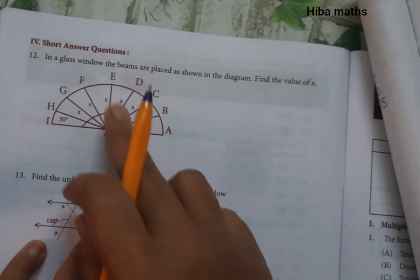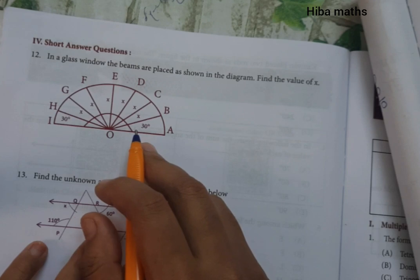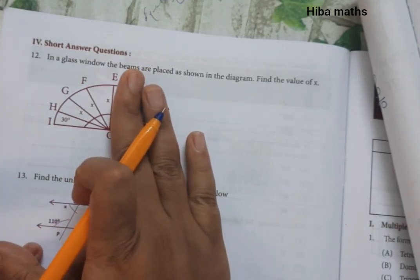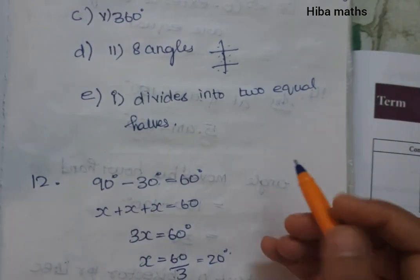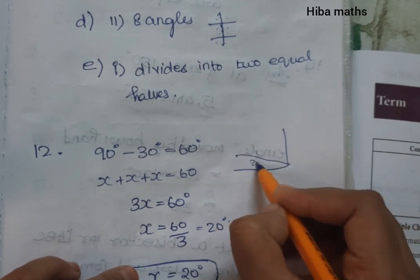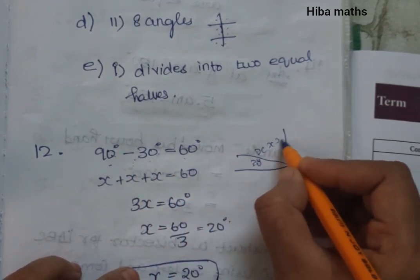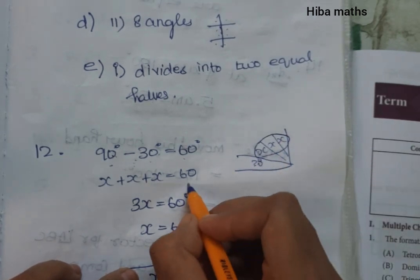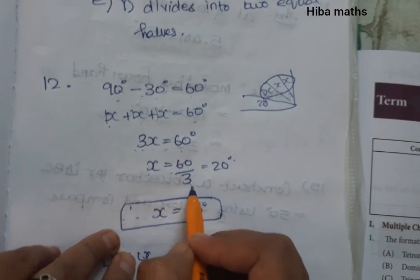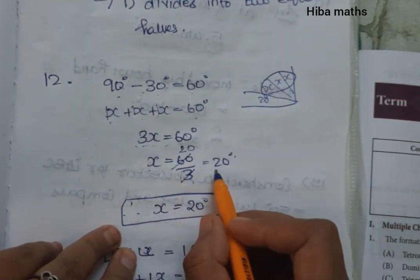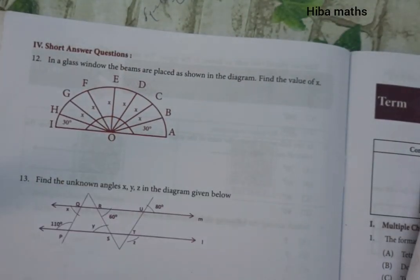In a glass window, the beam is placed as shown in the diagram. The angle DL is 90 degrees. The total is 90 degrees minus 30 degrees equals 60 degrees. The expression for x is 3x, so 3x is equal to 60 degrees. Therefore x is equal to 60 divided by 3, which gives the value of x as 20 degrees.